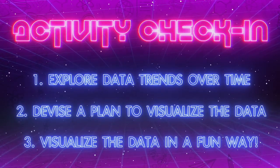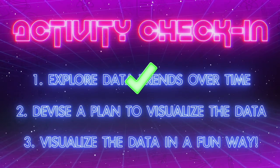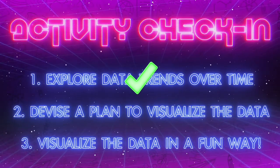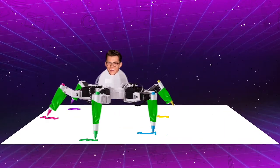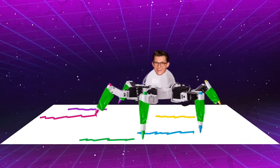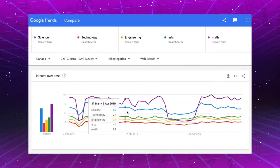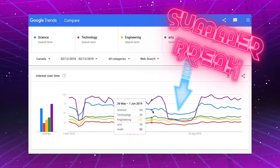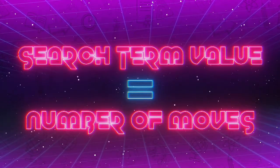So we've explored how search data relating to STEAM has trended over time. Now here's how we plan to visualize the data. We've taped markers to the six-legged robot's legs, so when it moves, it will leave marks on the paper below it. Then we'll take a data point from our trends data in the summer dip and turn it into the number of times the robot will do a move.